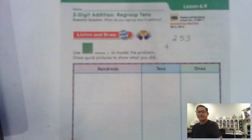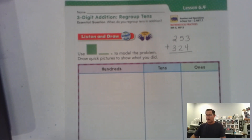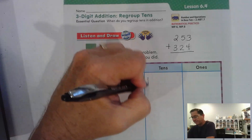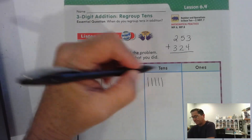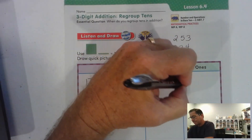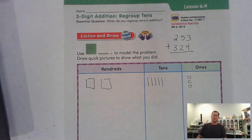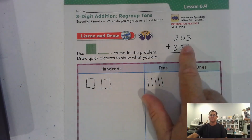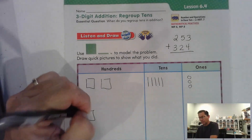So we have 253 plus 324. We're going to draw a picture to model 253 — two hundreds, five tens, three ones — and we're going to add 324.